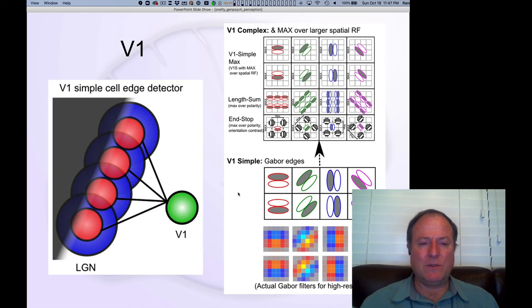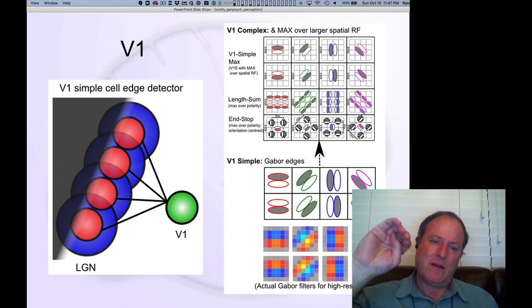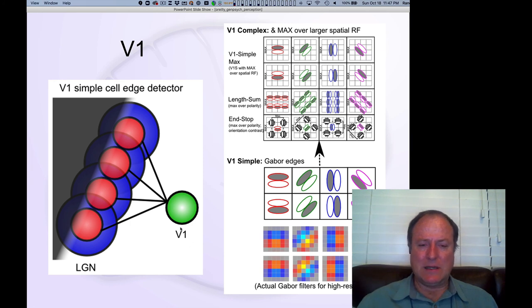If you line up some of these on-center, off-center cells from the LGN into a particular kind of line here, you get what happens in primary visual cortex in V1, known as the simple cells. These were discovered by Hubel and Wiesel - they got the Nobel Prize for this discovery.